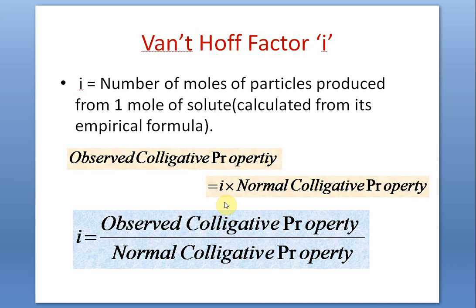So i equals the observed colligative property divided by the normal colligative property — this is another definition of i. The first definition: i is the number of moles of particles produced from one mole of solute (empirical formula). The second: i equals observed colligative property divided by normal colligative property. Since colligative properties are inversely proportional to molecular mass, there is an inverse relationship between any colligative property and the molecular mass of the solute.